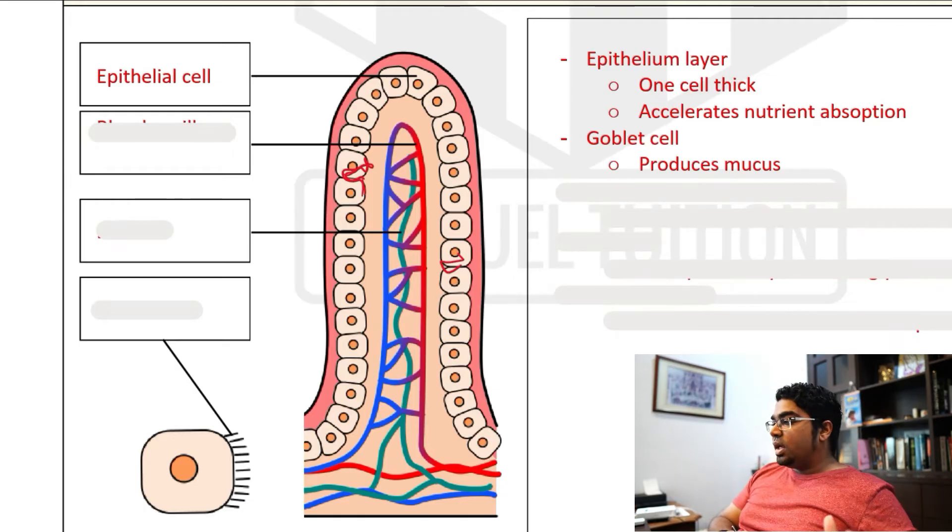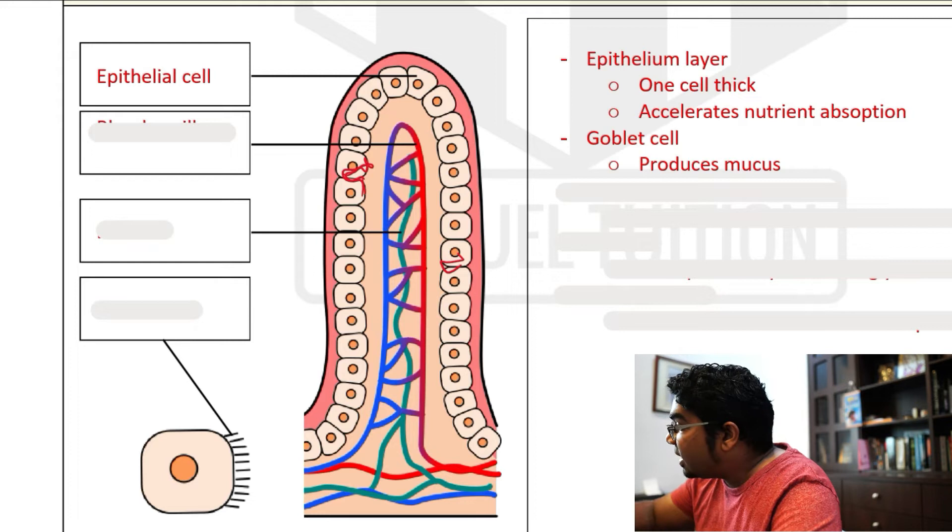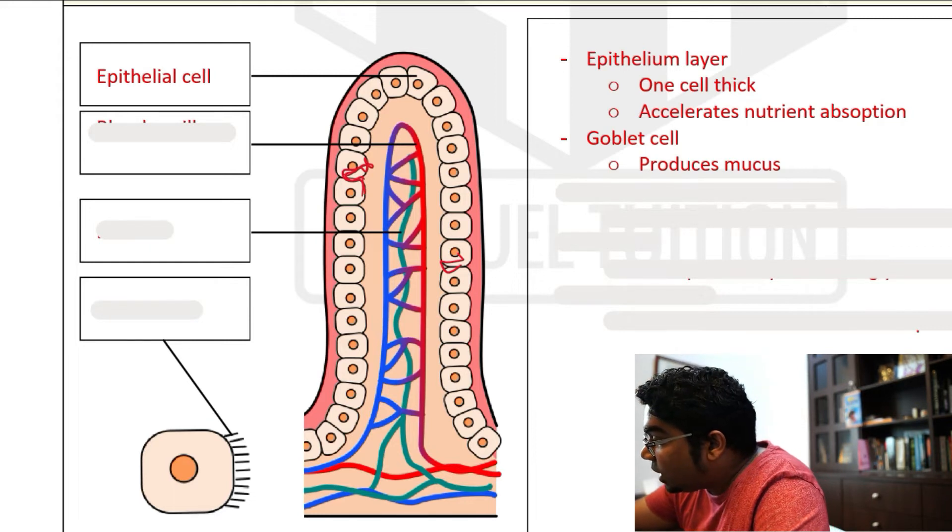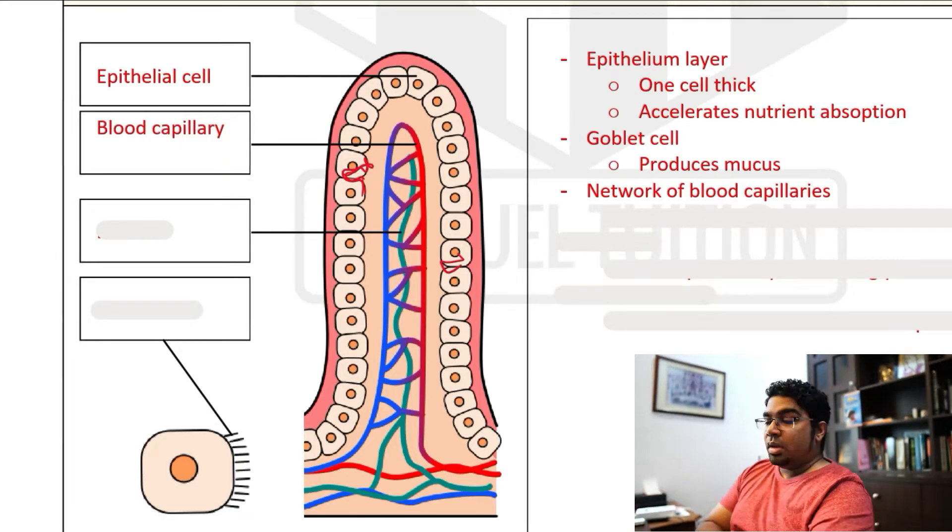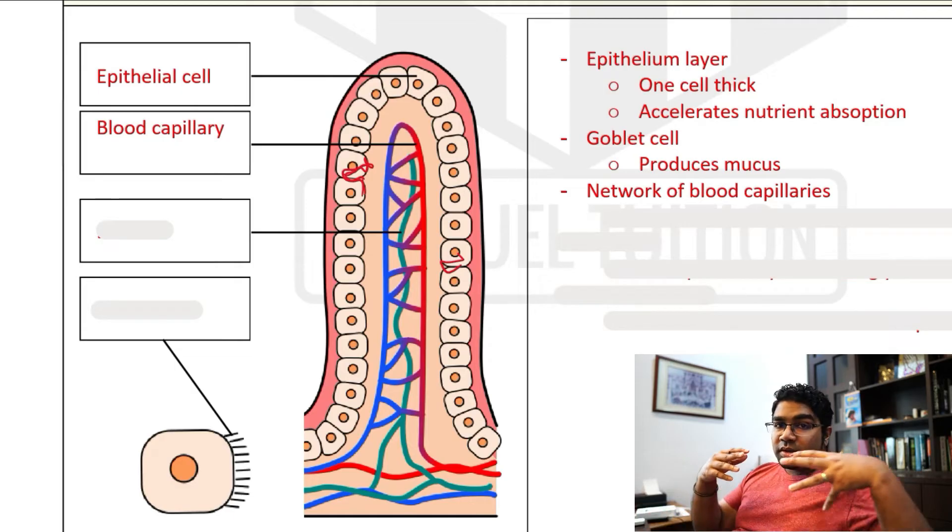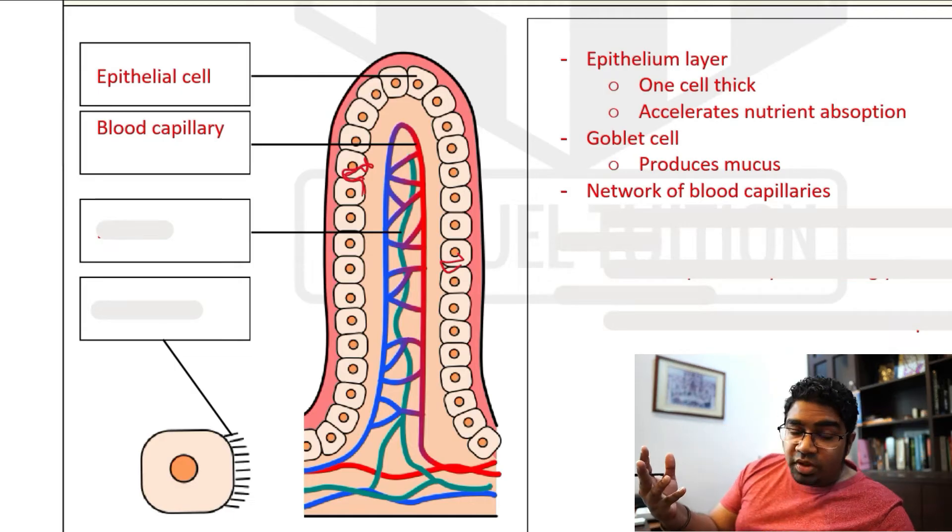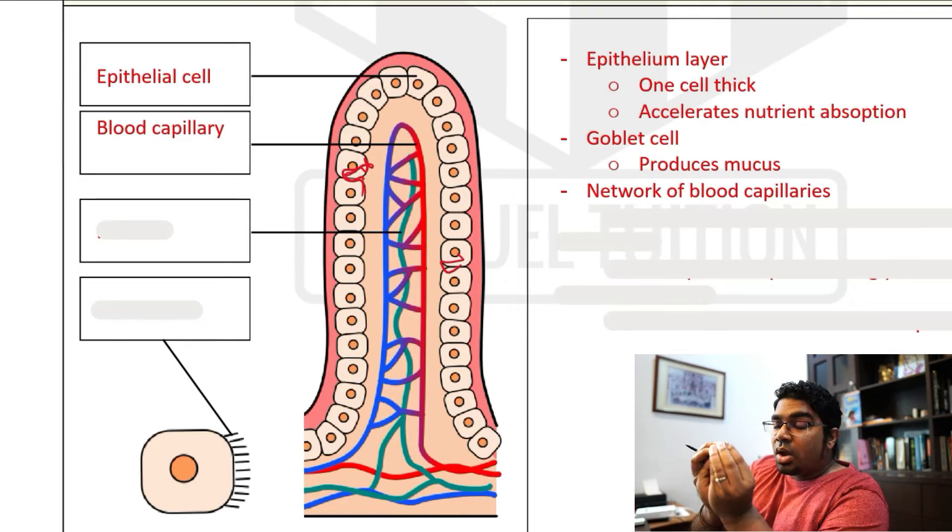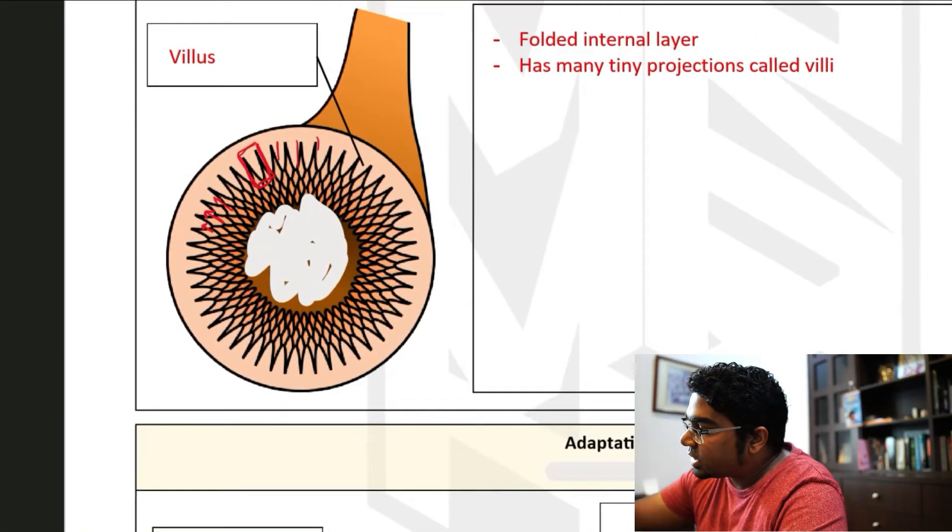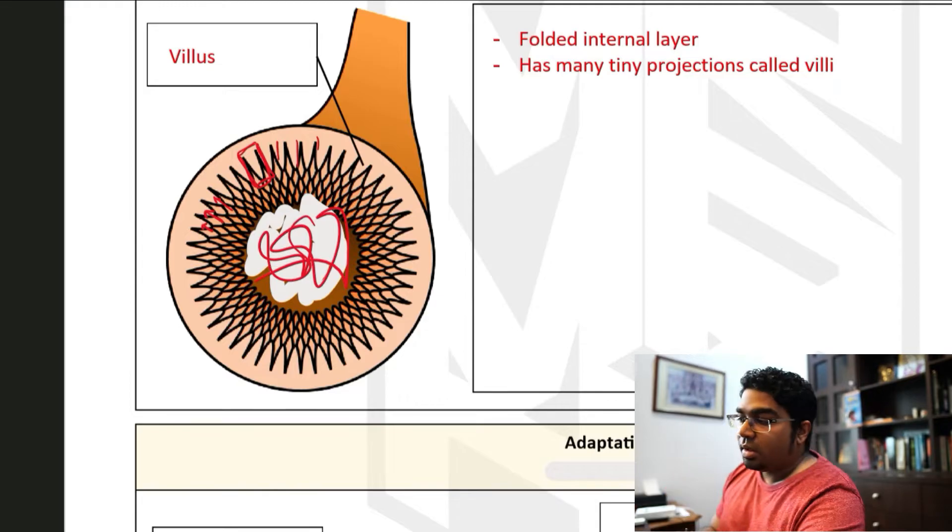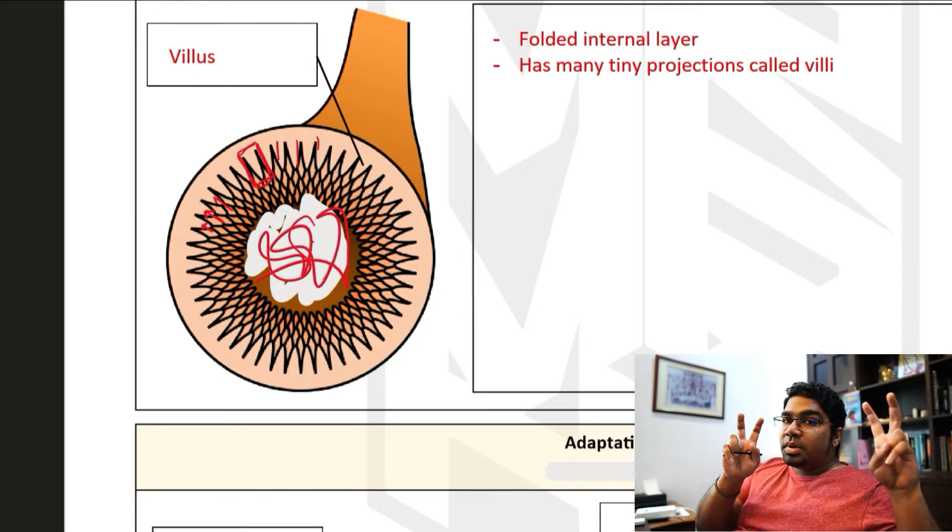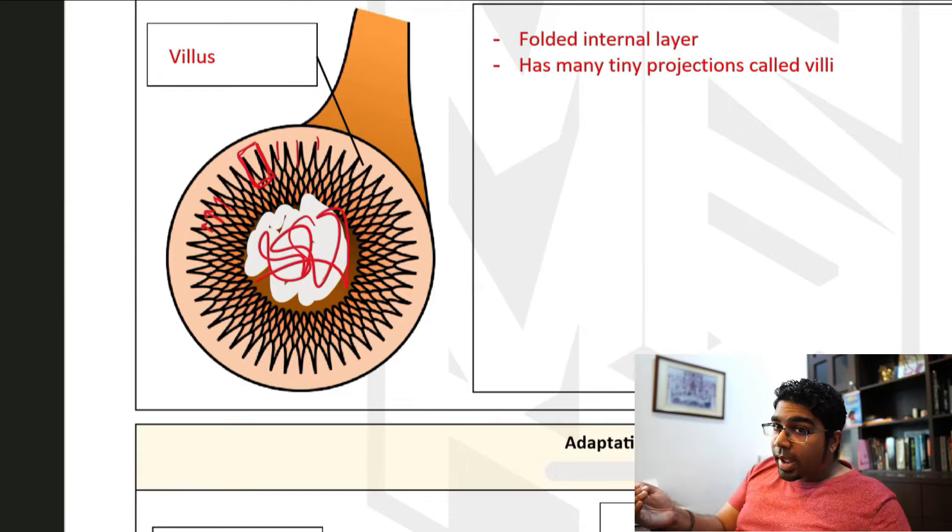It makes it smooth. And then we have the network of blood capillaries. As you can see here, this one that goes from blue to red. So this network of blood capillaries, where are the nutrients all going to go? The nutrients are currently in the lumen of the small intestine, of the ileum here. All the nutrients are here.